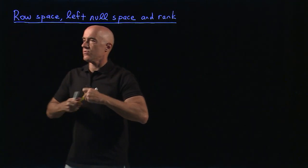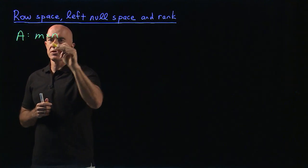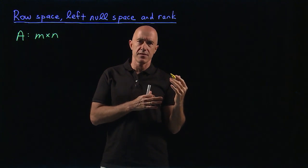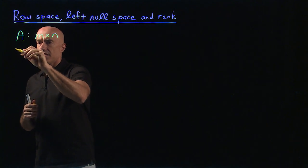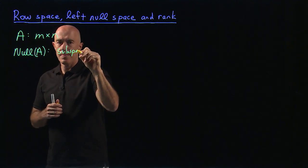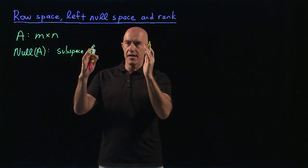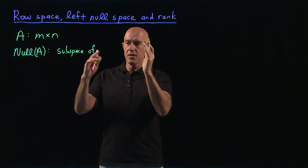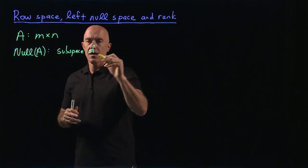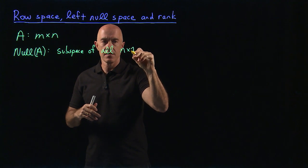Let's quickly review. If A is an M by N matrix — M rows and N columns — let's see what spaces these subspaces are subsets of. The null space of A consists of column vectors that multiply A, so the number of rows in the column vector equals the number of columns of A. So the null space is a subspace of all N by 1 column vectors.